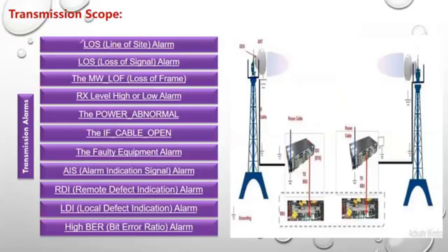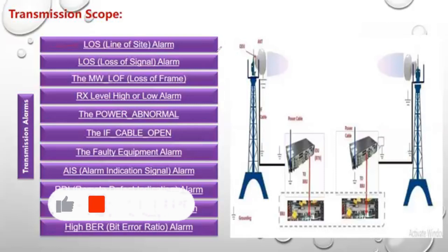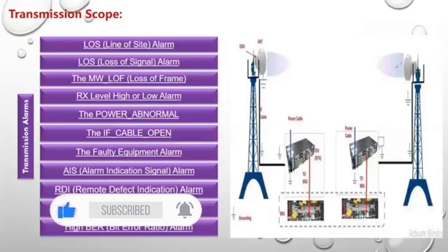Now let's talk about the first alarm, which is the line of sight alarm. We said that both the two microwaves or the two outdoor units must be seeing each other clearly.